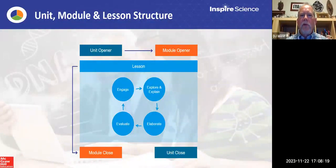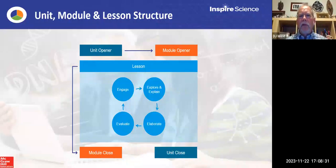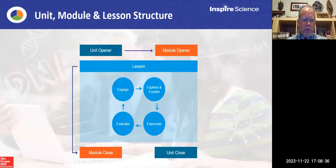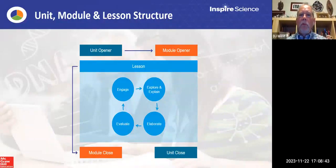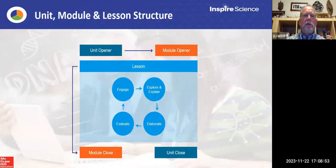When we get into the lessons, we're going to use the 5E lesson model — engage, explore and explain, evaluate and elaborate. You can see it goes in a circle. When we come to the end of the lessons in the module, we come back and reflect and do some review at the module level. When we come to the end of the modules, you have an opportunity to do some reflection on that opening unit.